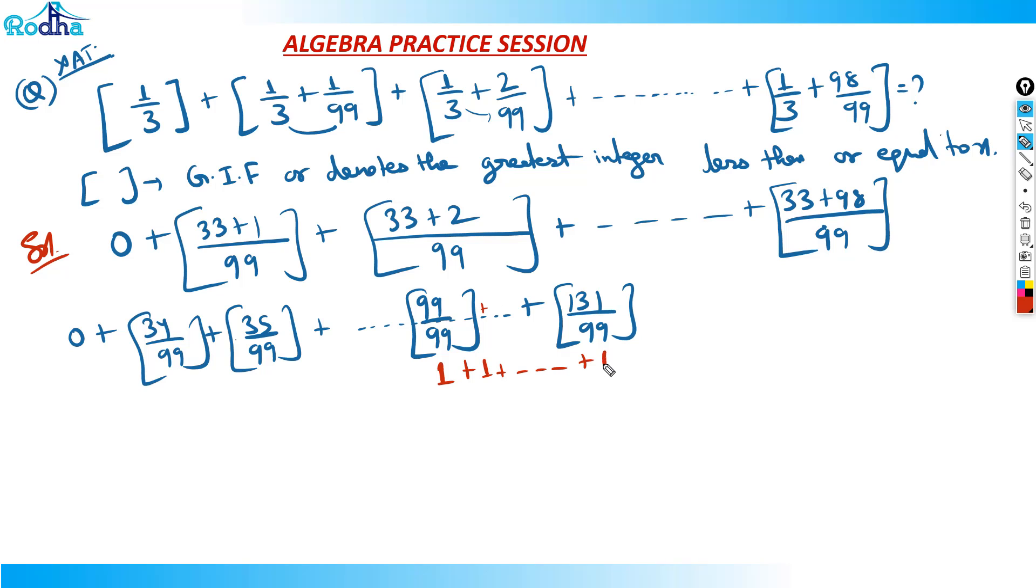From 99 to 131, if you count it is 33 times. All the previous will be 0 because till 98 by 99, it is 0 point something. 0 point something, its integral part is what? That is 33 only. That means 33 is the answer.